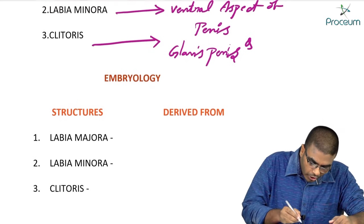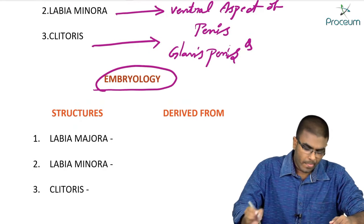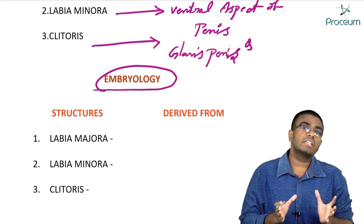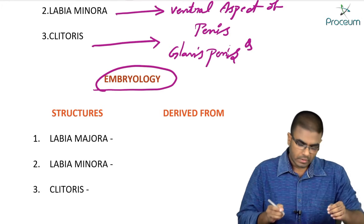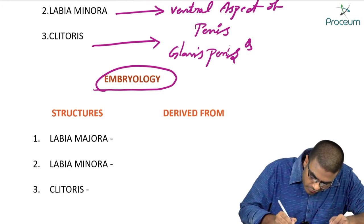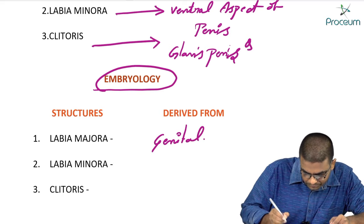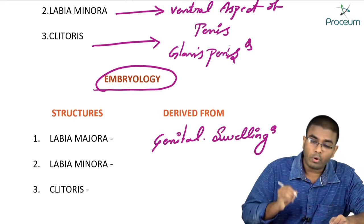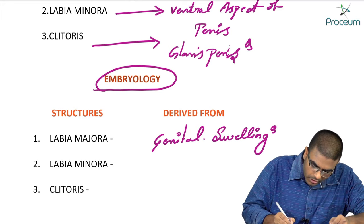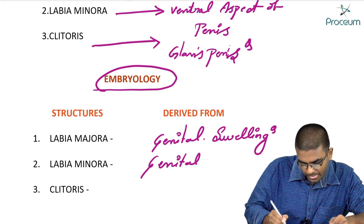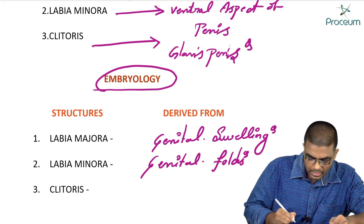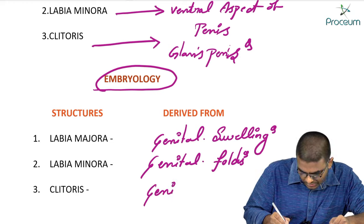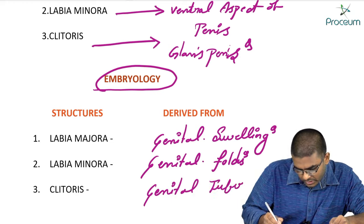Let's discuss embryology. Labia majora are derived from genital swellings — a very important question. Labia minora are derived from genital folds. Clitoris takes its origin from the genital tubercle.